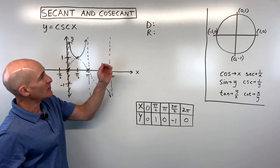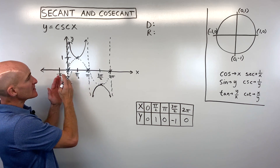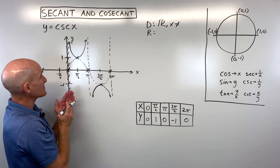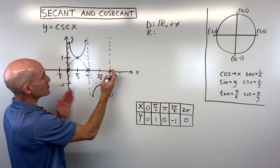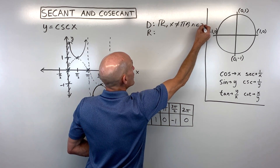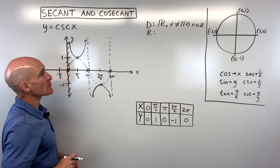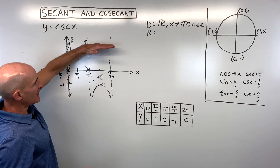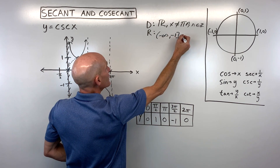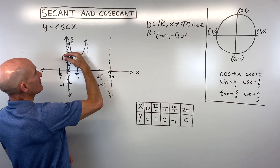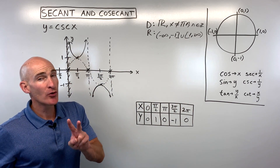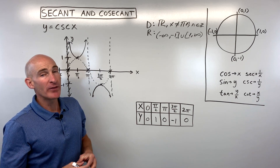Let's talk about domain and range for cosecant. The domain is all real numbers, but x cannot be where the vertical asymptotes are — at 0, π, 2π, which are multiples of π. So x cannot be πn, where n is an element of the set of integers. The range goes from negative infinity to −1 (including −1), then jumps up to 1 on up to positive infinity.